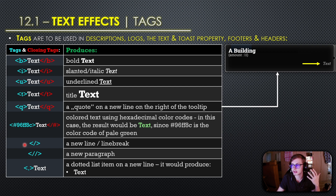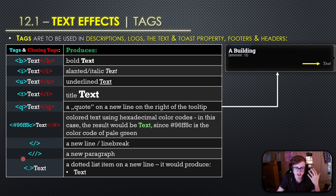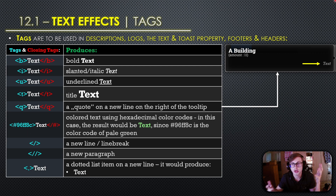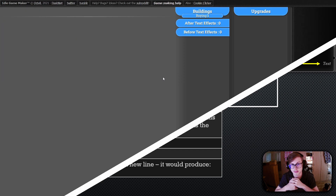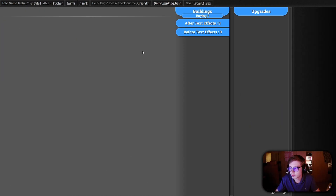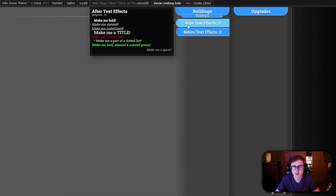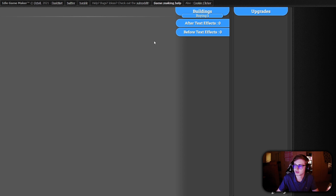Next up we have three formatting tags: the slash tag which produces a new line or a line break, the double slash tag which produces a new paragraph, and the dot tag which organizes the text after it into a dotted list item on a new line. Now that we know which tags we can use, let's do a small exercise using these tags in a game so we can more fully understand them.